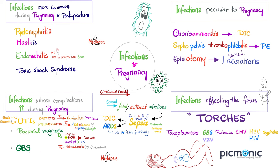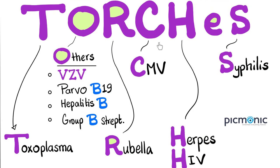Then we have infections unique to pregnancy, such as chorioamnionitis, septic pelvic thrombophlebitis, and episiotomy with its lacerations. And then we have a group of infections affecting the fetus — this is what we call TORCH infections, which is an acronym. The T is toxoplasma; the O is other infections, including varicella zoster virus, parvo B19, hepatitis B, group B strep, and gonorrhea; the R is rubella; the C is CMV cytomegalovirus; the H is herpes simplex virus and HIV; and the S is congenital syphilis.